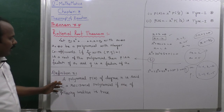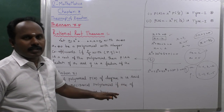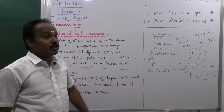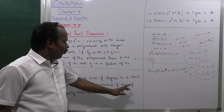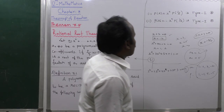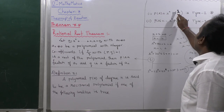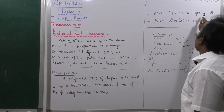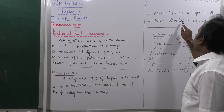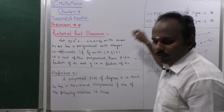Next, definitions. A polynomial P(x) of degree n is said to be a reciprocal polynomial if one of the following conditions is true: Type 1 — P(x) = x^n · P(1/x), or Type 2 — P(x) = -x^n · P(1/x).